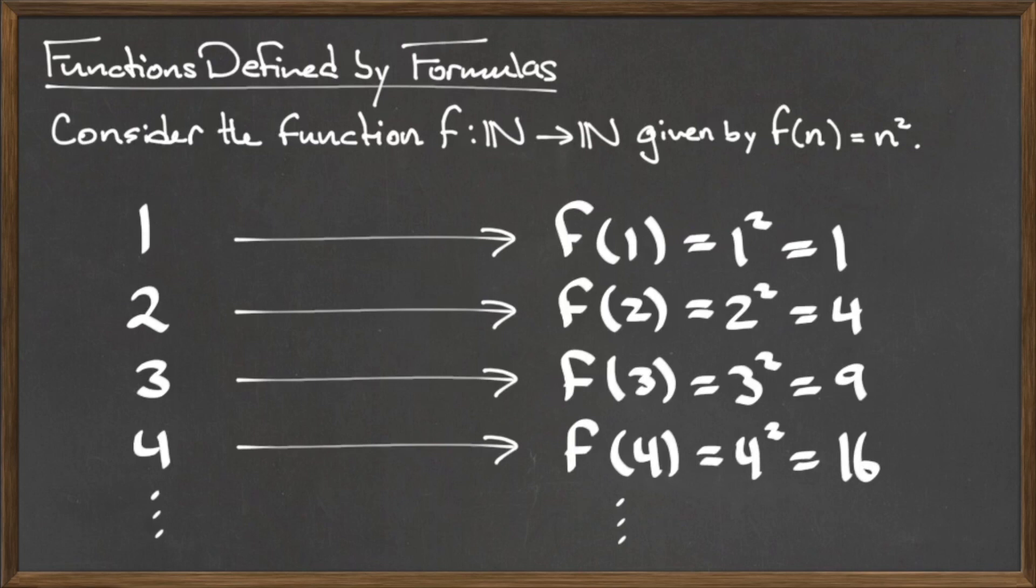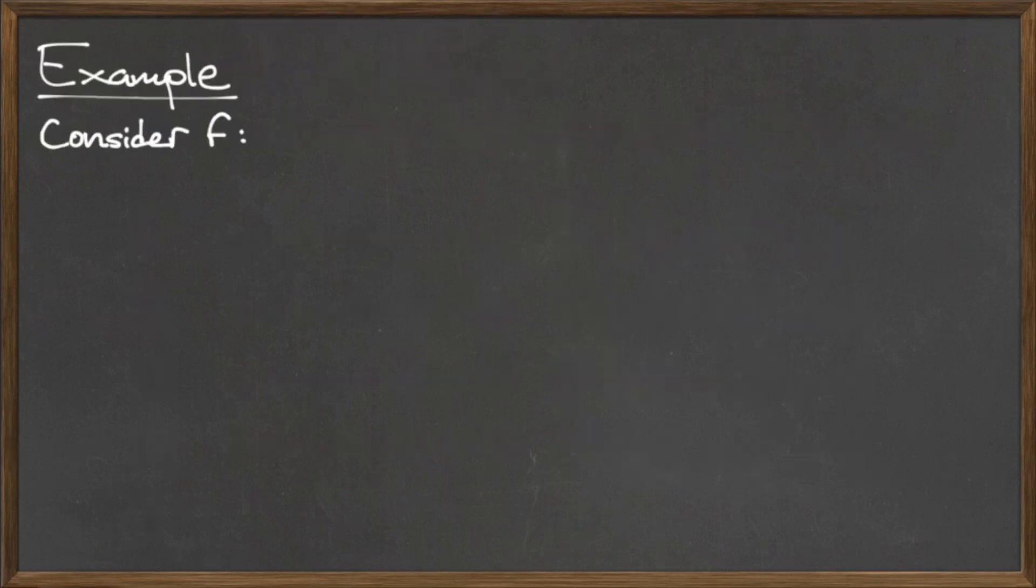As a second example, consider the function f from the natural numbers to Z₅, given by f(a) = a mod 5.